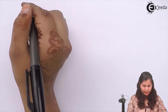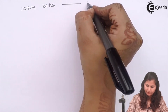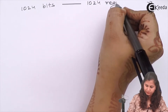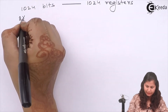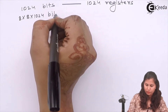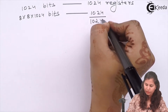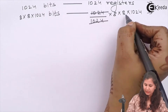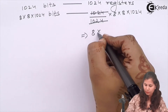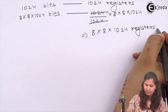This is just like the word problems we solve in school. If we want 1024 bits stored in 1024 registers, each register storing 1 bit, and now we want 8 x 8 x 1024 bits to be stored — how many registers do we want? That is 1024 divided by 1024, multiplied by 8 x 8 x 1024. The 1024 cancels, so the total registers required is 8 x 8 x 1024.